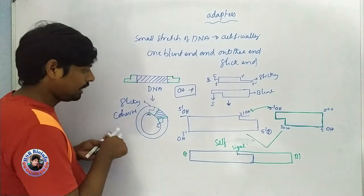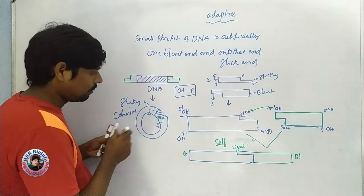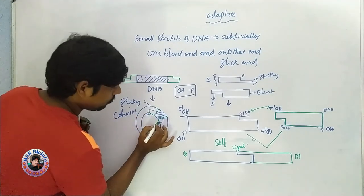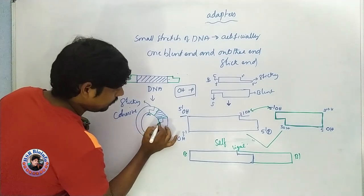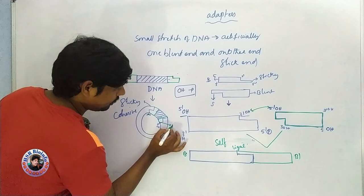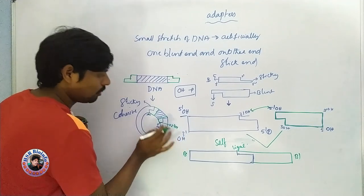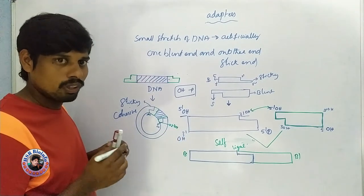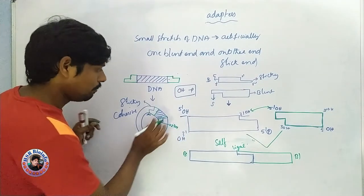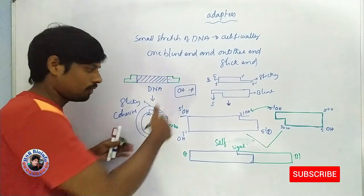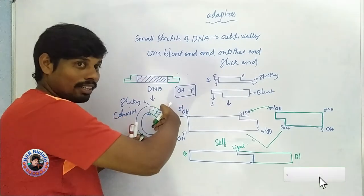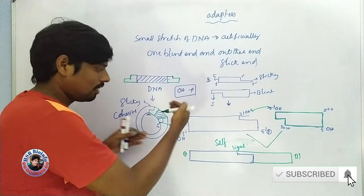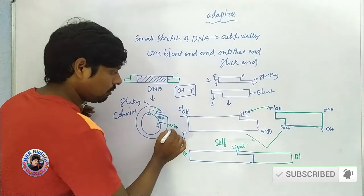When you see the alignment, one of the hydroxyl groups is here. You can see the 3' hydroxyl group — these two hydroxyl groups are here on the board.